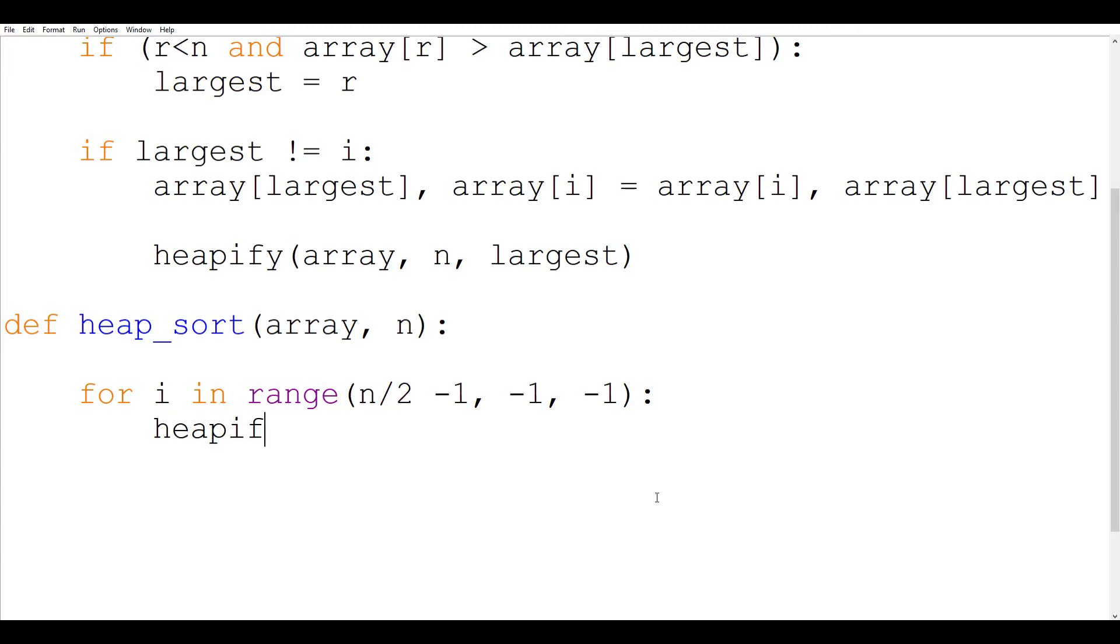So we are going to heapify the array. The length of the array is n and i is the index of the parent node. So initially the last parent node will have this index and the first parent node will have 0 which is coming just after minus 1. So that's it we have built a max heap.